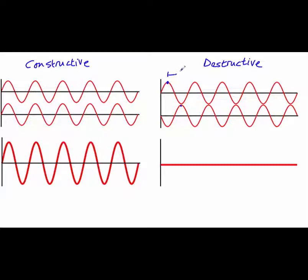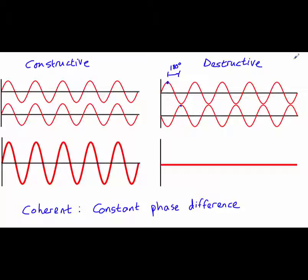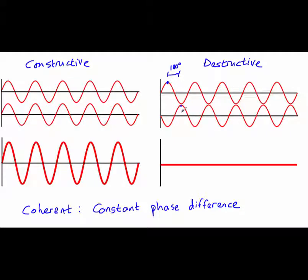Note that for interference to work properly, we have to have two coherent waves — that is, waves that have a constant phase difference. For two waves to be coherent, they must have the same frequency that doesn't change. Both sets of waves shown here are coherent. In the first example, they are in phase and remain in phase the whole time because they have the same frequency. In the second example, the two waves are 180 degrees out of phase — they are in antiphase — but they are coherent because that phase difference is constant all the way through.